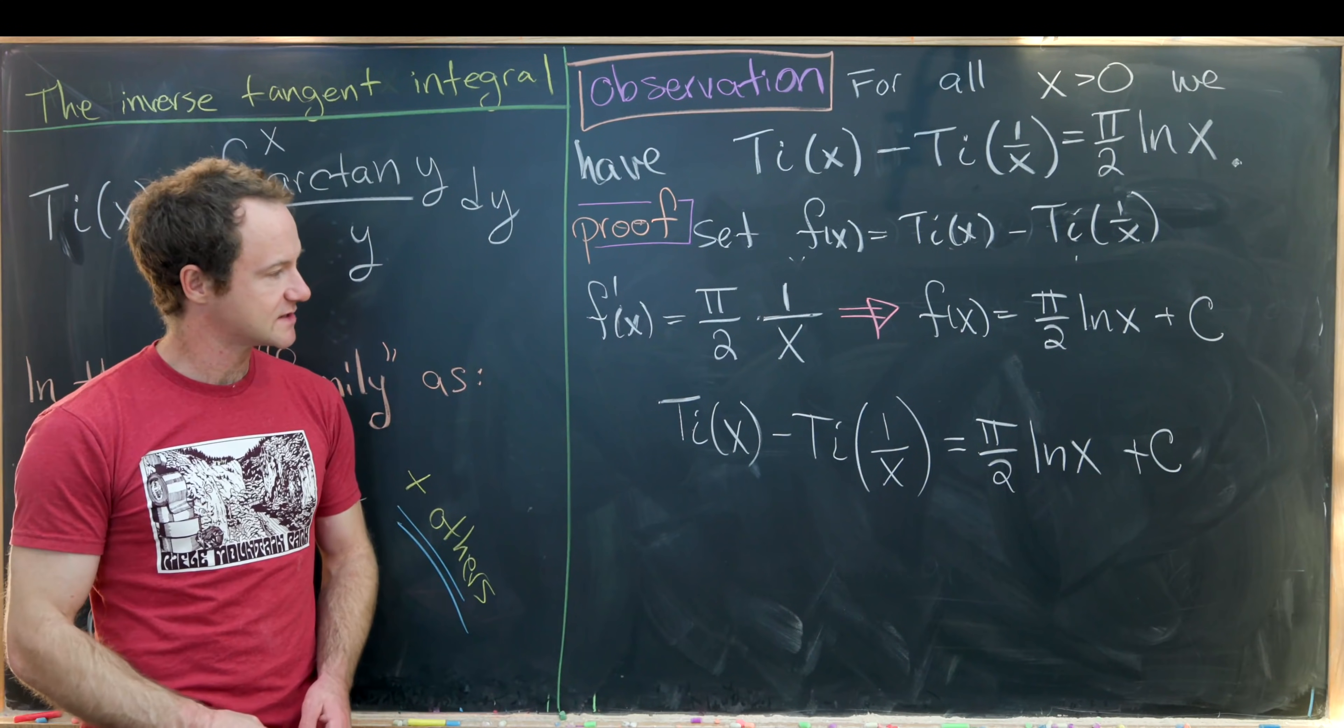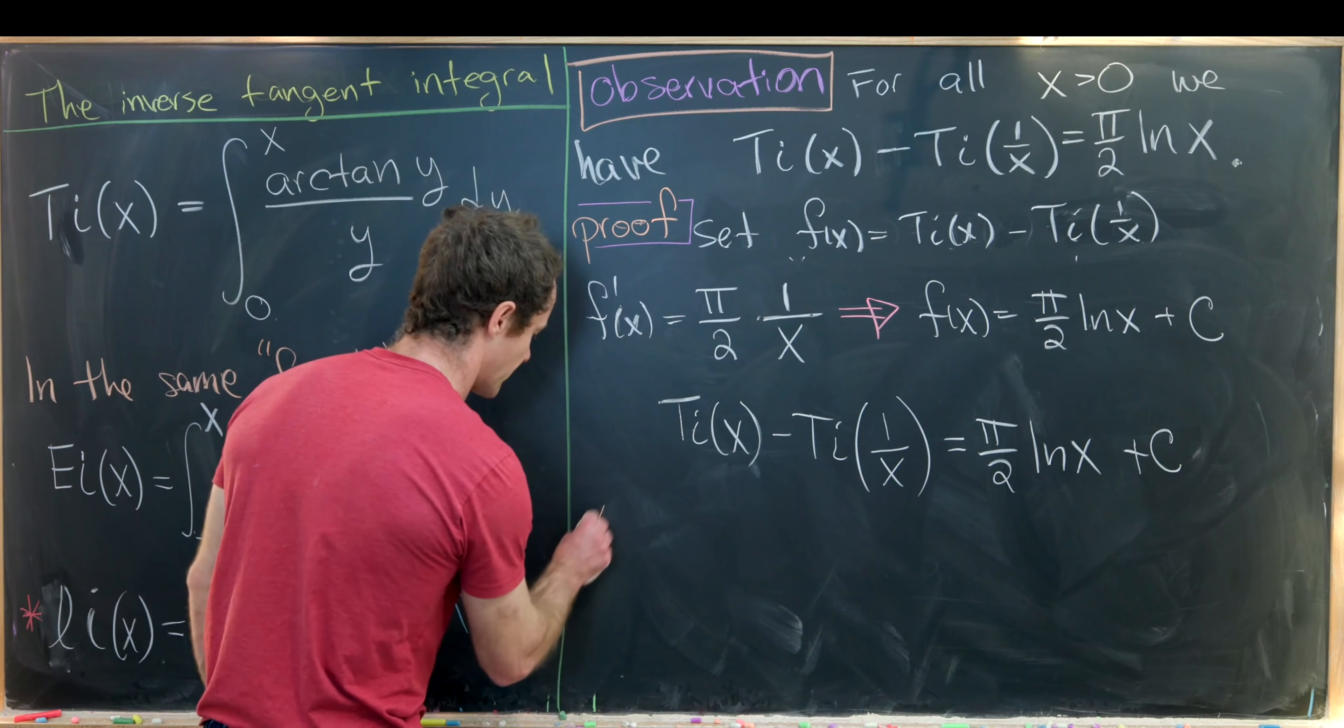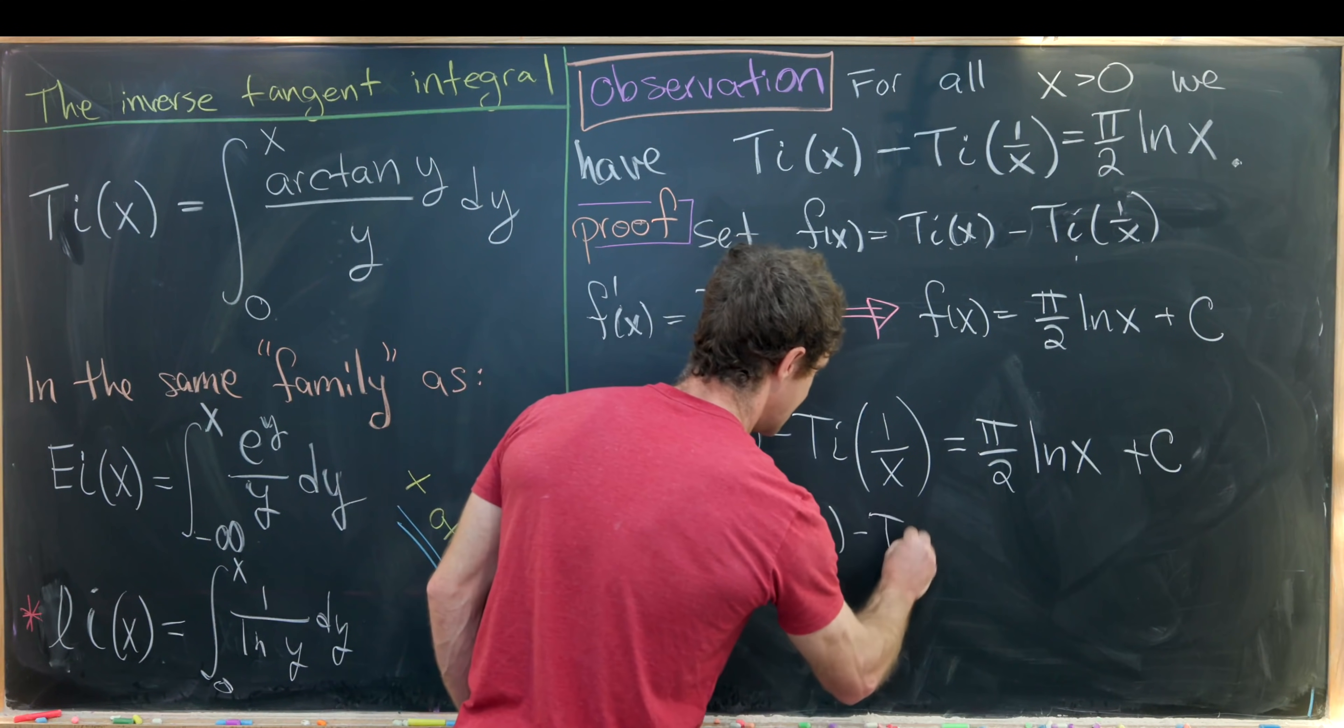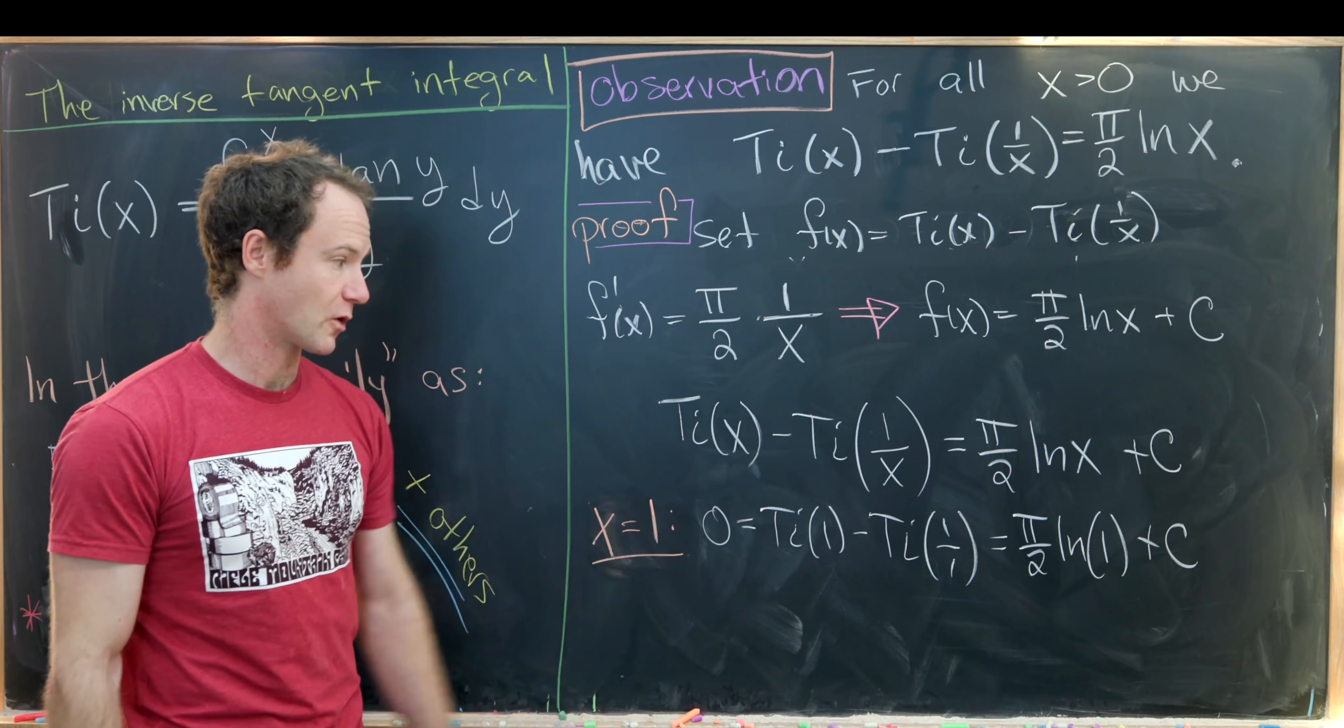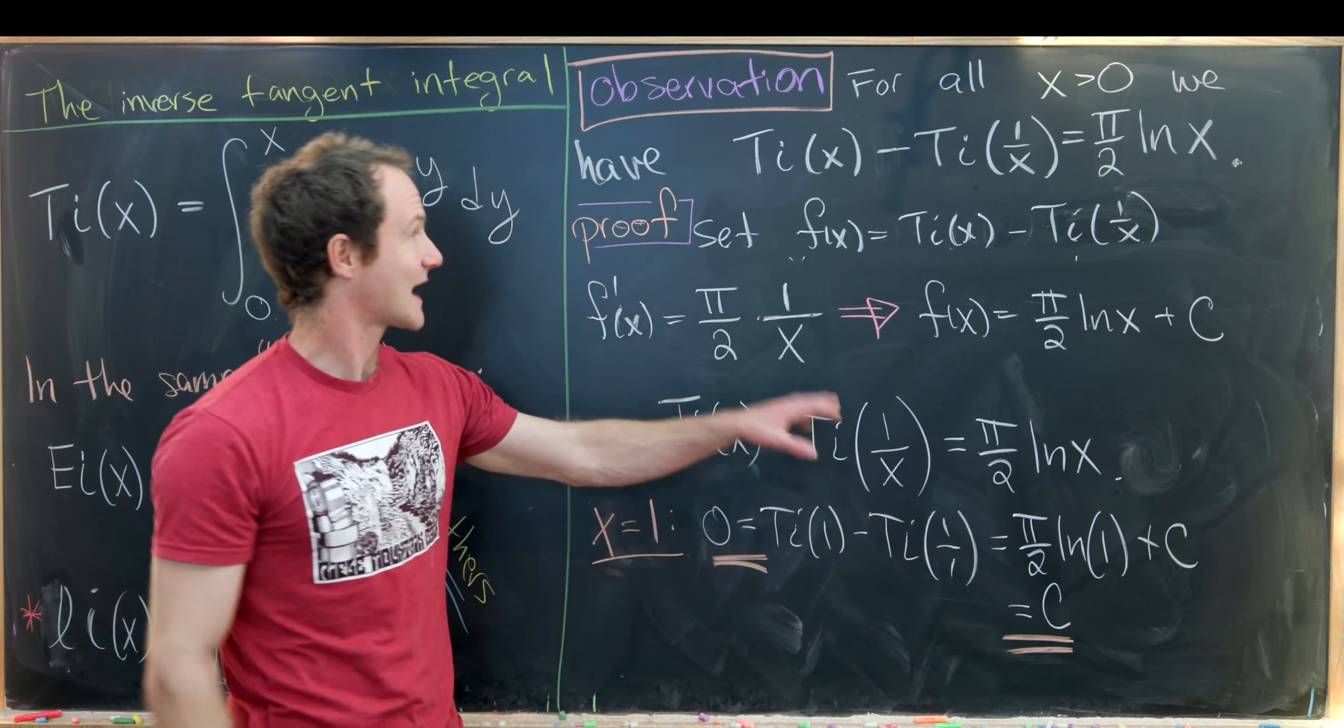So now how can we determine that constant? Well, finding values of this Ti of x is actually very difficult, but luckily we know that x and 1 over x are the same when x is equal to 1 because 1 over 1 is equal to 1. So that'll give us 0 over here on the left hand side. So just to reiterate, I'm going to set x equal to 1 and I'll have 0 is the same thing as Ti of 1 minus Ti of 1, 1 over 1, which is equal to pi over 2 times the natural log of 1 plus a constant. But furthermore we know that the natural log of 1 is 0, so that gives us 0 is equal to this constant. But that means we can scrub this constant away and we have exactly what we wanted to show.